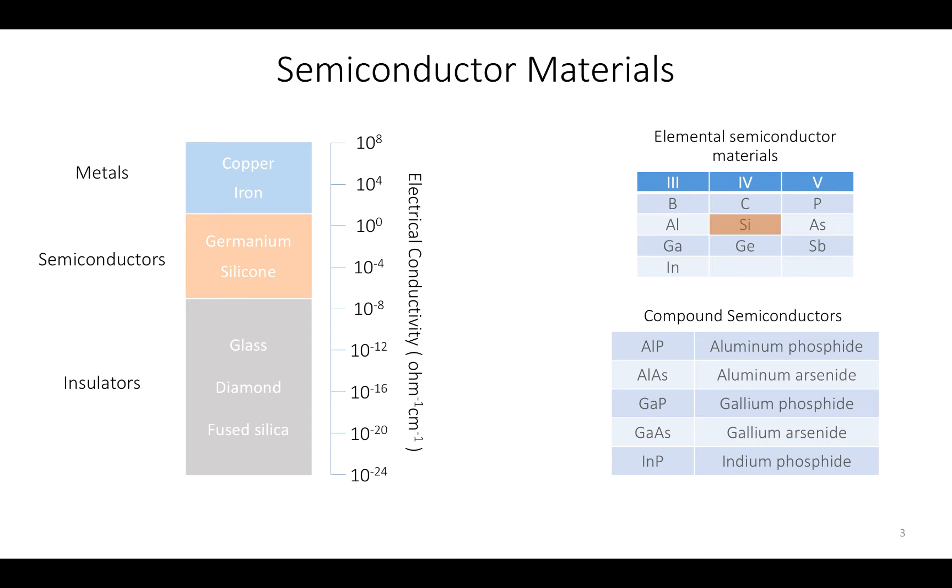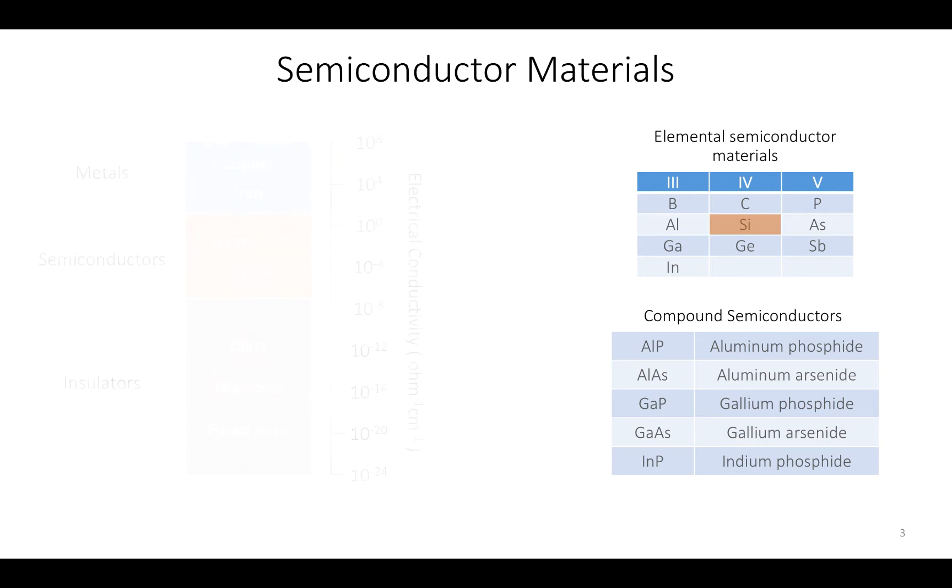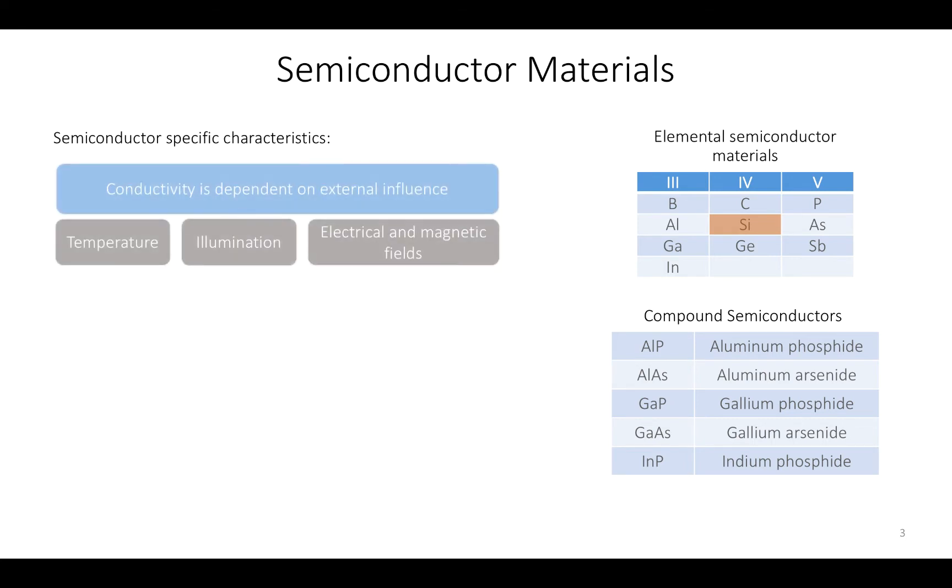Semiconductor materials have the following specific characteristics. First, conductivity is dependent on external influences such as temperature, illumination, electrical, or magnetic fields. Second, conductivity increases in parallel with temperature increase. And third, conductivity can be widely modified by inserting dopants inside the semiconductor crystal. These characteristics make semiconductors the most appropriate material to be used for electrical signal processing. We will discuss all of them separately in upcoming lectures.